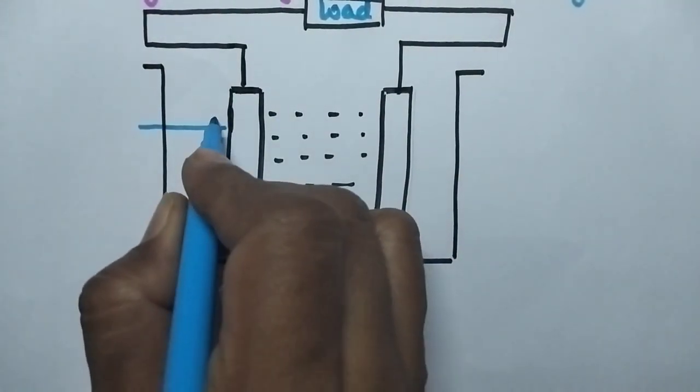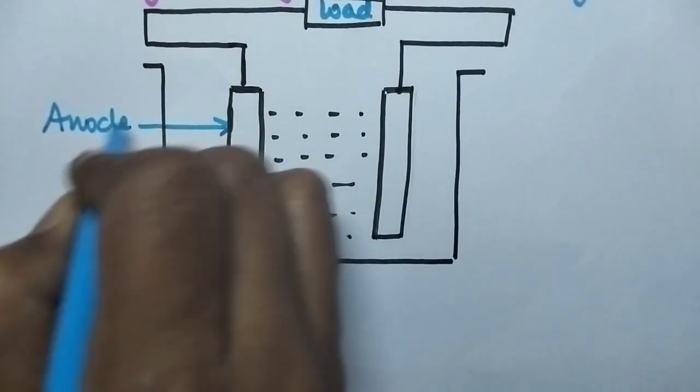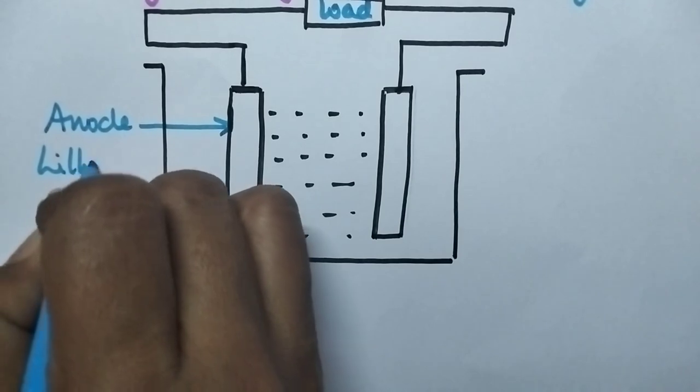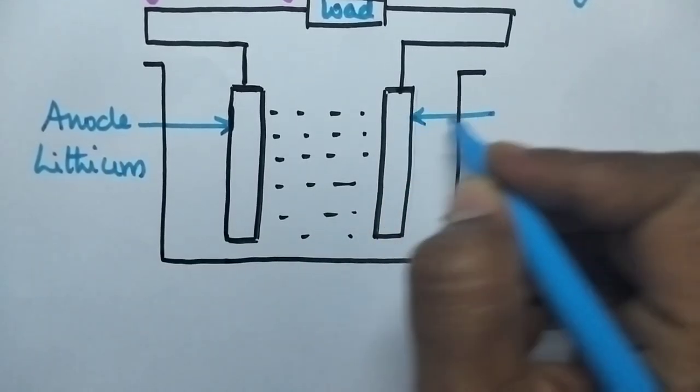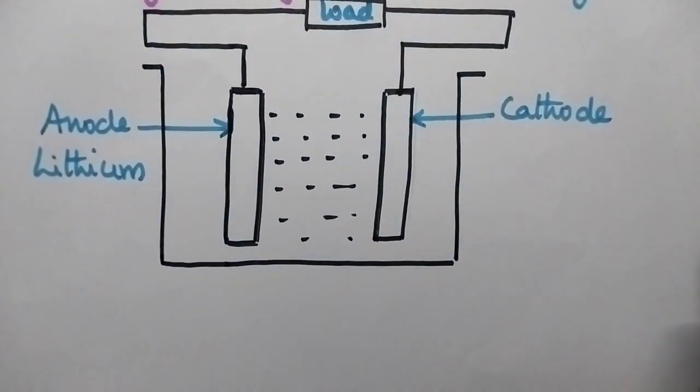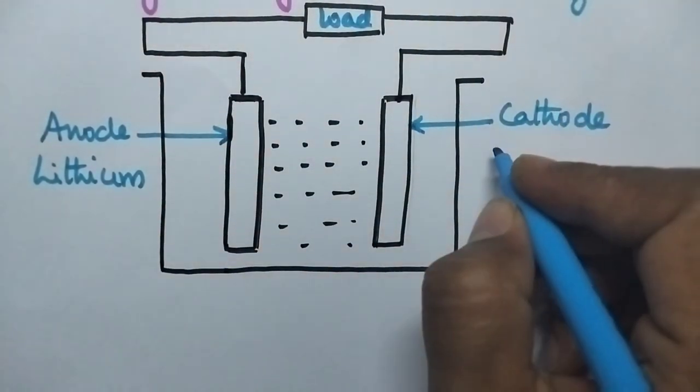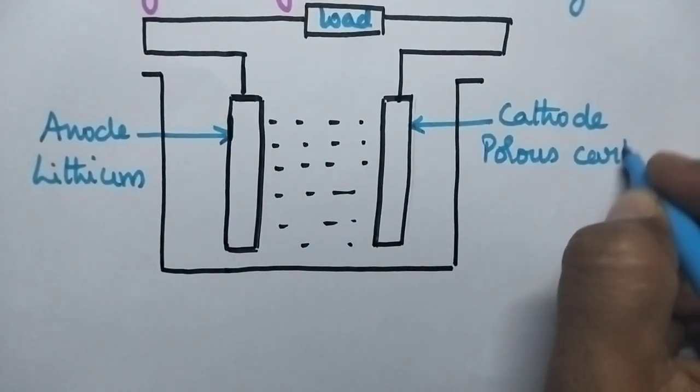Here, the anode is made up of lithium metal and the cathode is made up of porous carbon rod.